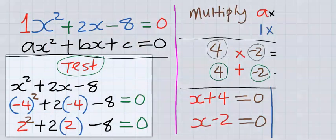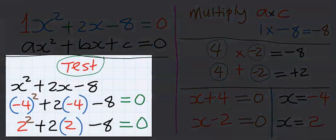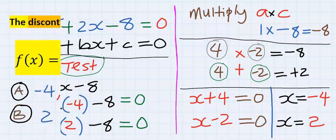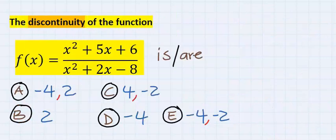You can test for x equal to minus 4 at the denominator, and x equal to 2 also at the denominator. Both will give you zero, which we return the function to infinity. Hence, our answer is A.